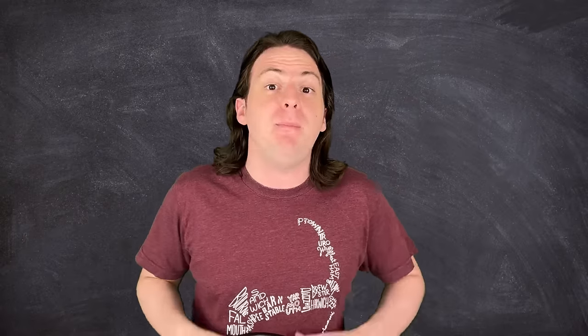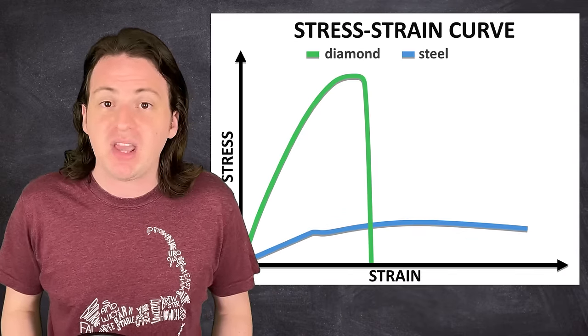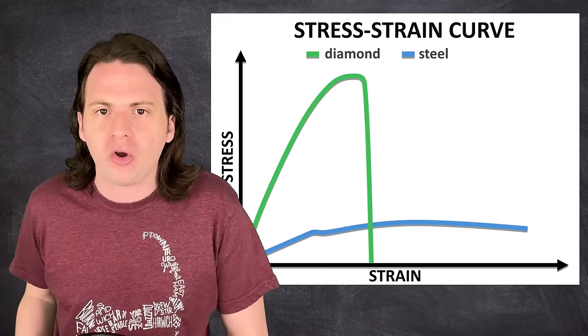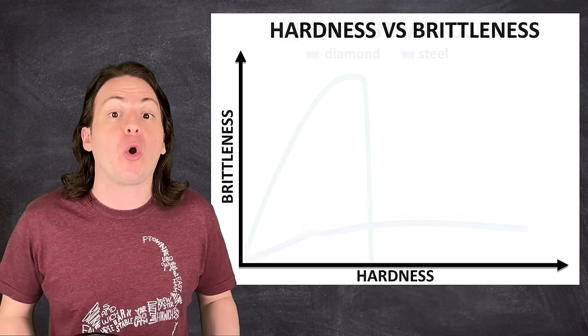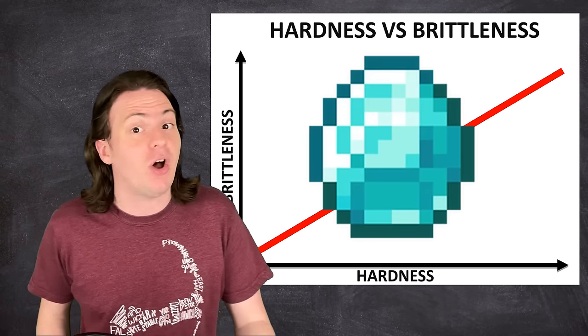This is the big trade-off in material science. As a material becomes harder, it also becomes more brittle. And diamonds are no exception.